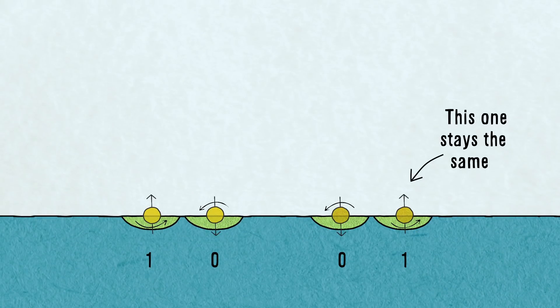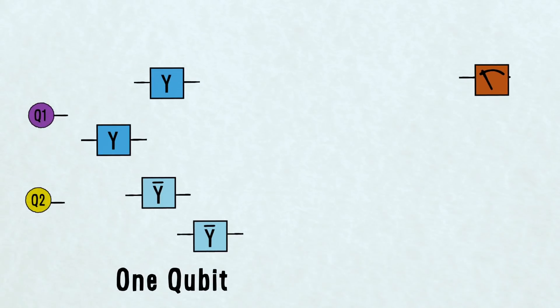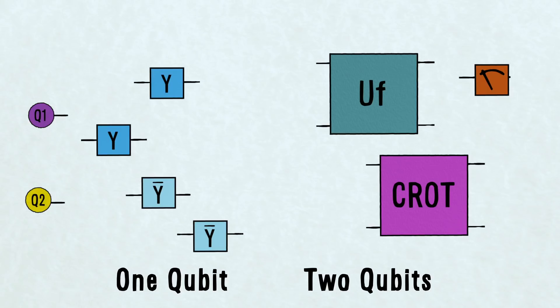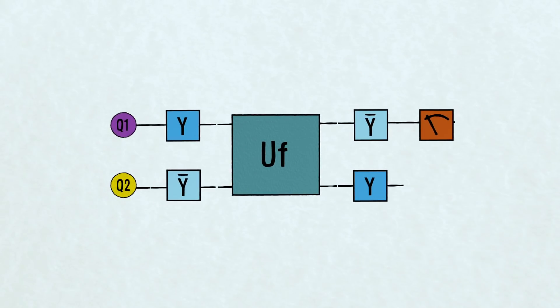All operations have their own symbols. Some are one qubit operations, others involve two qubits. A quantum algorithm happens by stringing these operations in a particular order.